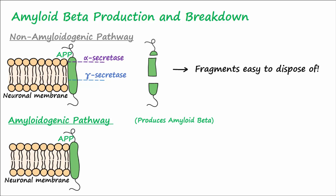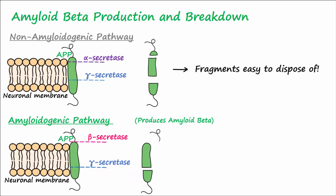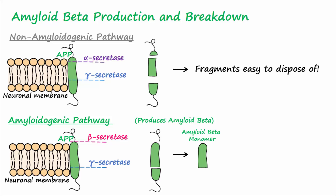In the amyloidogenic pathway, the enzymes beta secretase and gamma secretase sequentially cleave APP into fragments, resulting in the production of amyloid beta monomers, which are proteins made up of 36 to 43 amino acids.